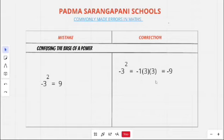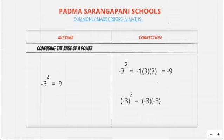Whereas if the expression is given as minus 3 the whole square, it is equal to minus 3 into minus 3, which is equal to positive 9. So you should understand that minus 3 to the power 2 is not equal to minus 3 the whole square.